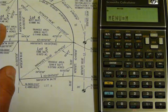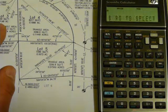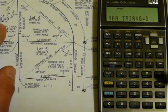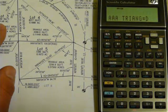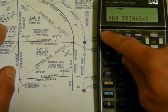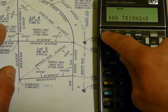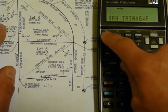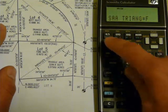And it will prompt us with RS to skip, one RS to select, so we can skip the options until we get to side-angle-angle. It's not that one, there it is, side-angle-angle triangle.